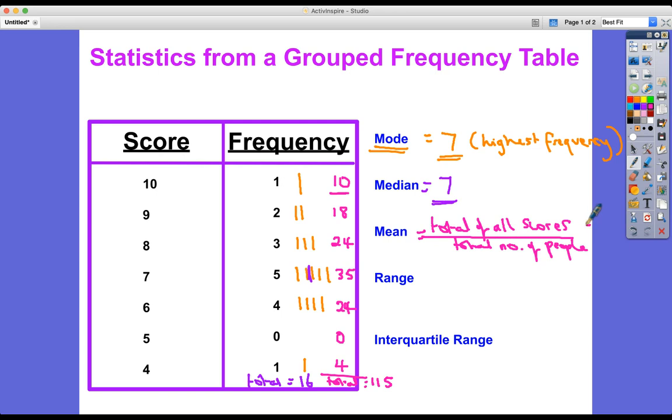So the total of all the scores is 115, divided by the number of people, which is 16. So the mean that we found from this grouped data is going to be 115 divided by 16, 7.1875. Again, they're all quite similar. It doesn't always happen this way.